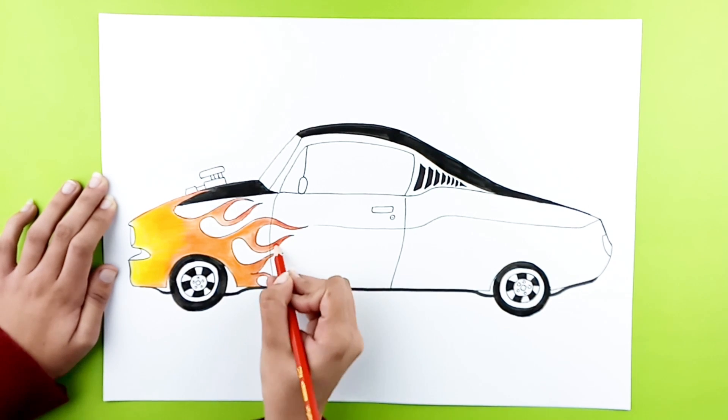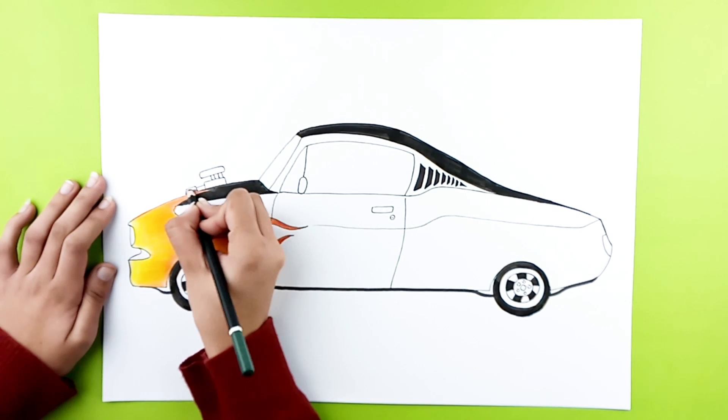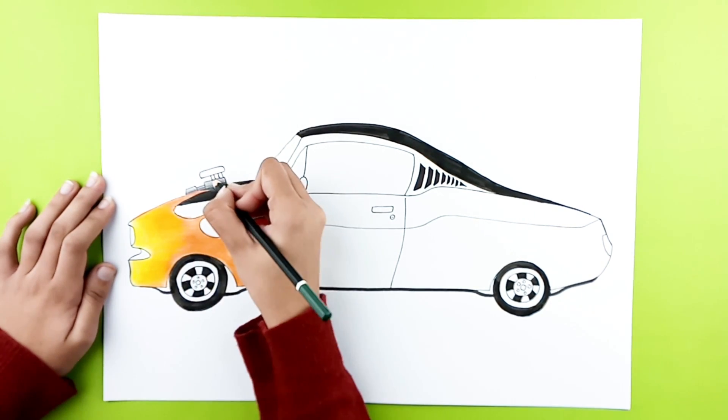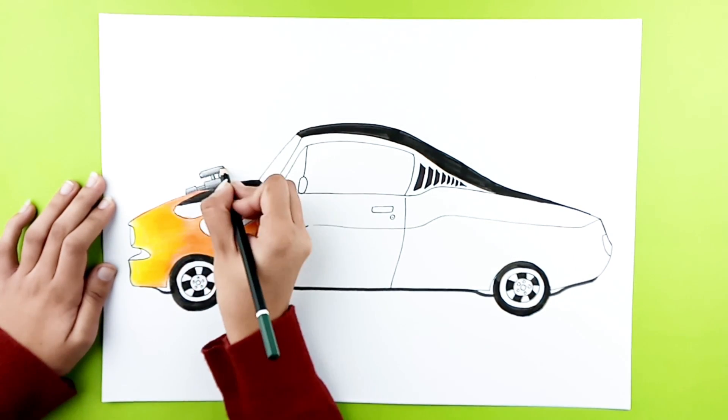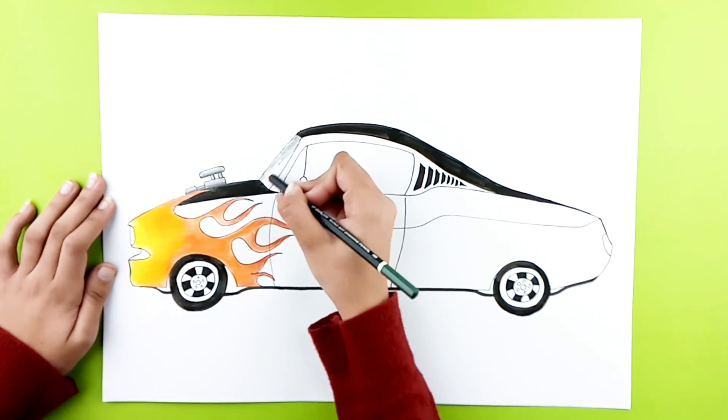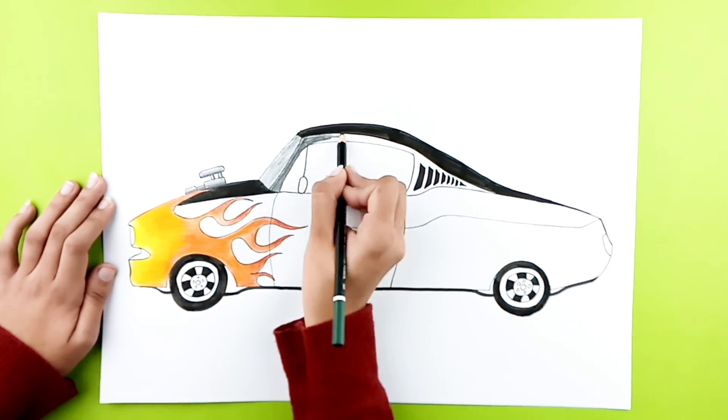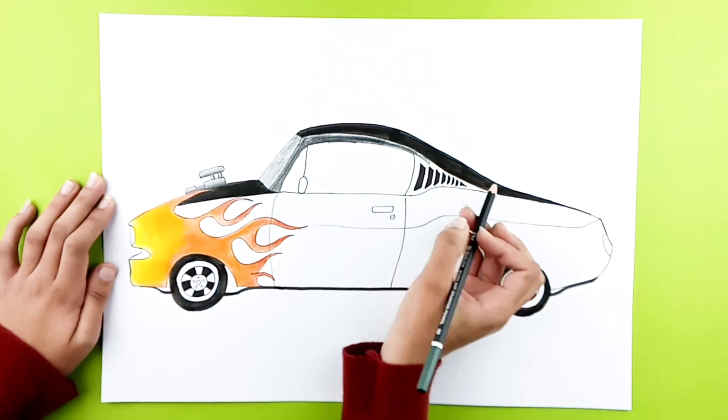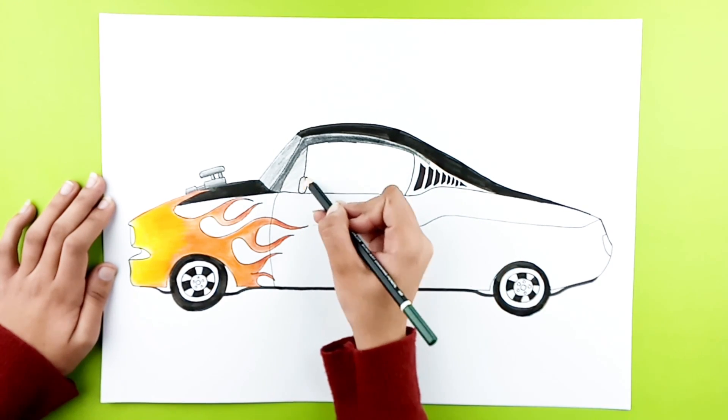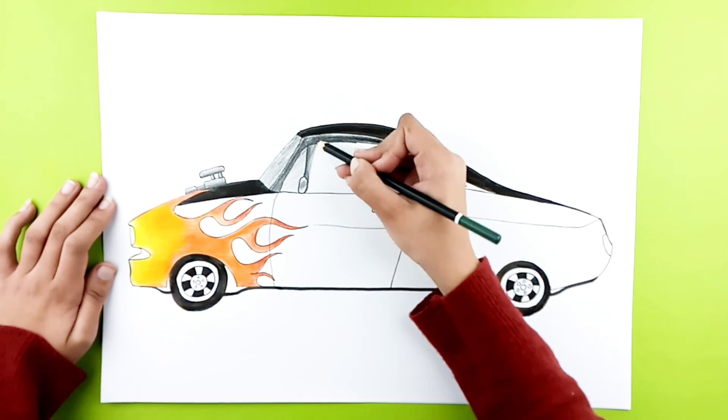Well done guys, it's looking flaming hot! Grab a grey pencil and color the details. The windshield and the side window. Use a light pressure to get a lighter shade of grey.